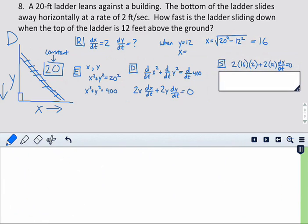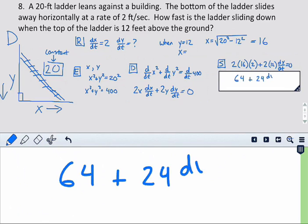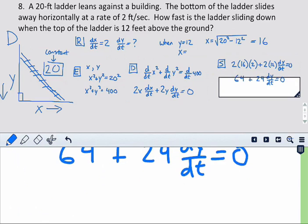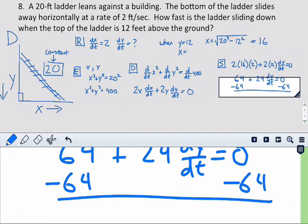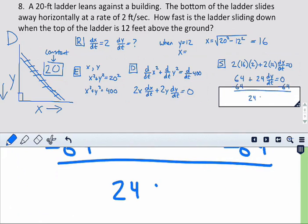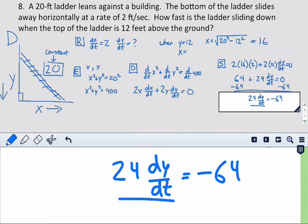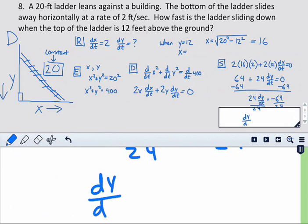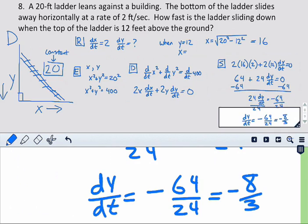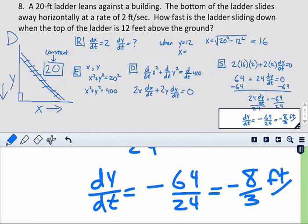So now let's go ahead and simplify. So we get 64 plus 24 dy/dt equals 0. And we're going to subtract the 64. And so we get 24 dy/dt equals negative 64. And then we're going to divide by 24. So dy/dt is going to equal negative 64 over 24, which reduces to negative 8 thirds. And that's going to be feet per second.